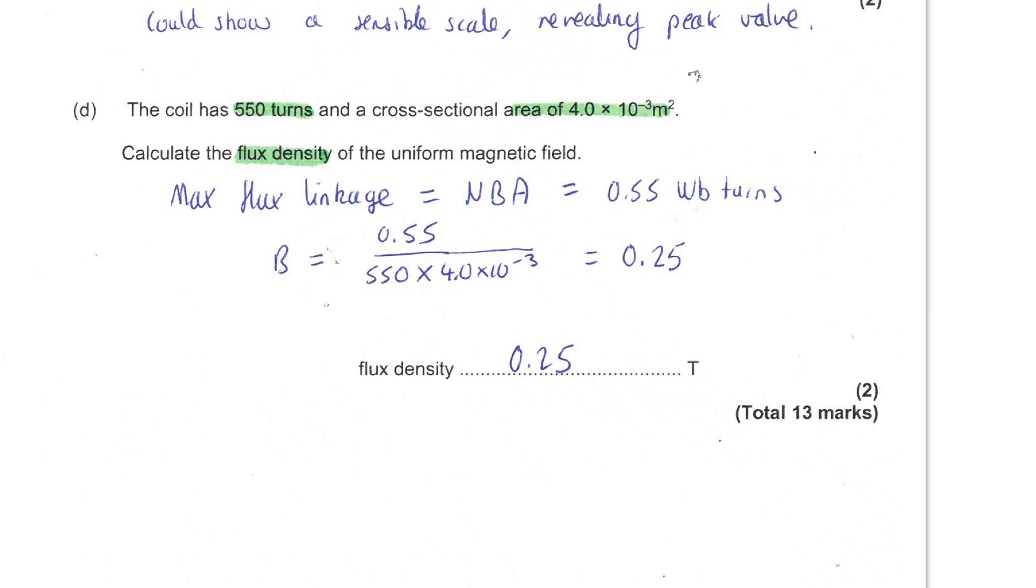Finally, you're told that the coil has got 550 turns and a cross-sectional area of 4 times 10 to the minus 3 meters squared. You're asked to calculate the flux density of the uniform magnetic field. On the first graph, you were able to see that the maximum flux linkage was 0.55 Weber turns. Maximum flux linkage is given by NbA. Rearranging allows us to find the flux density: maximum flux linkage divided by the number of turns multiplied by the area, leading to an answer of 0.25 Tesla.